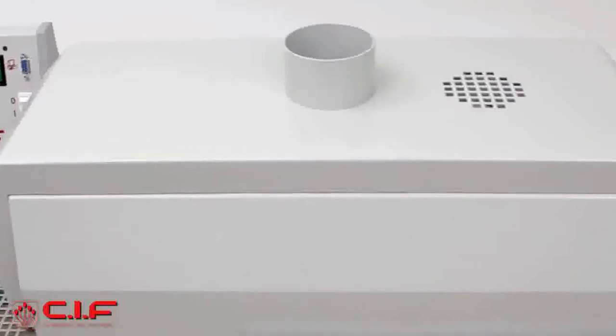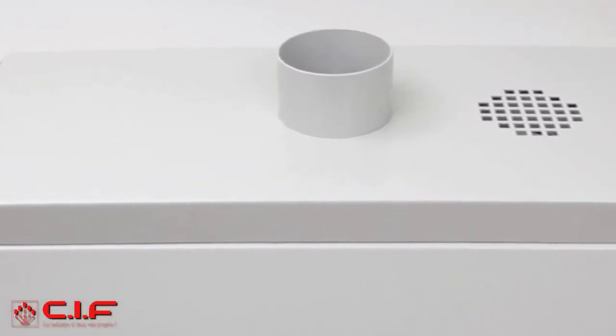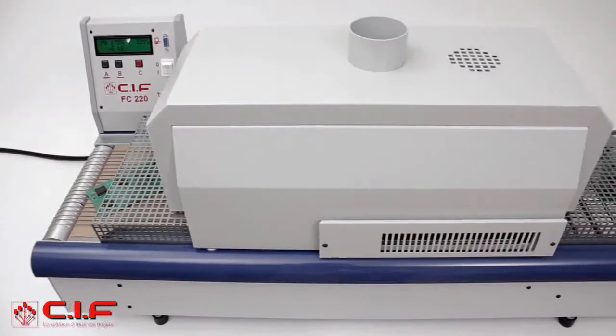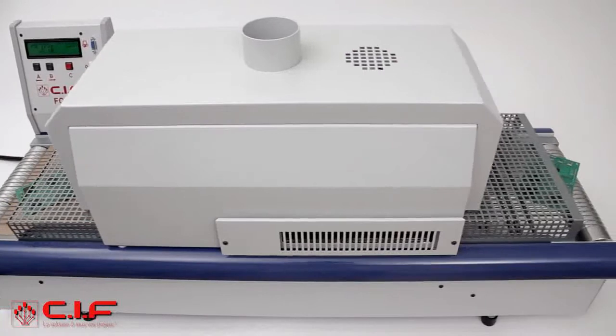The FC220 can be connected up to a fume filtration unit for welding purposes, such as the C.I.F. manufactured one, and the fumes are captured at the inlet and at the outlet via nozzles delivered as standard with all C.I.F. range of ovens.